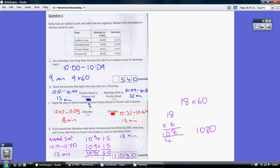Right, mark the day on which travelling from Preston Road to Preston Hill is shorter. Preston Road to Preston Hill. So, on a Saturday, it's this one here. 12.47 to 13.05, which is 18 minutes.